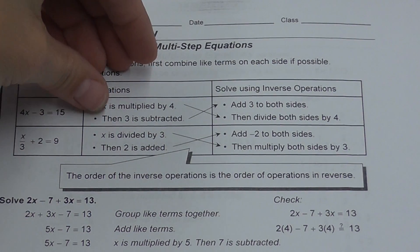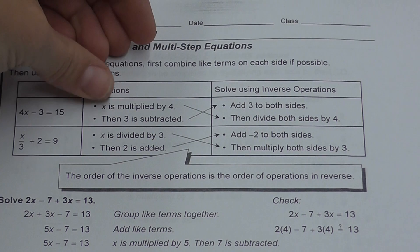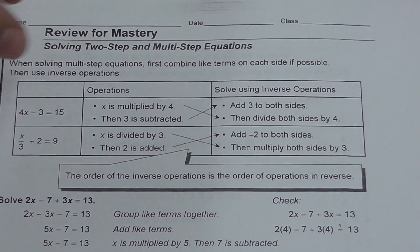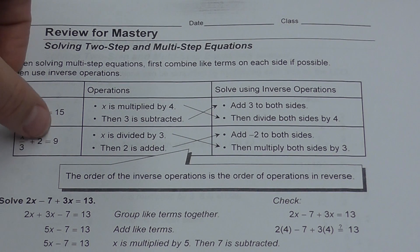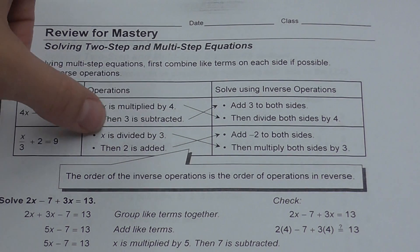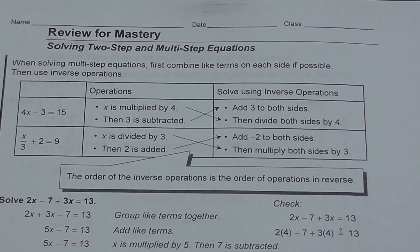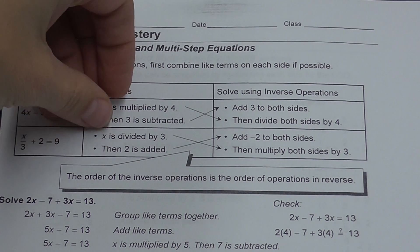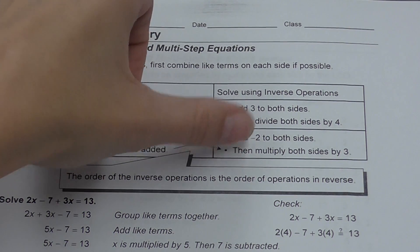Where 3 is subtracted, I'm going to add 3 to both sides. Where x is multiplied, I'm going to divide both sides by 4. On this next problem, we have x divided by 3 plus 2 equals 9. So x is being divided by 3, then 2 is being added. Doing the inverse and reverse means instead of dealing with x divided by 3 first, I'm going to multiply both sides by 3 at the end.